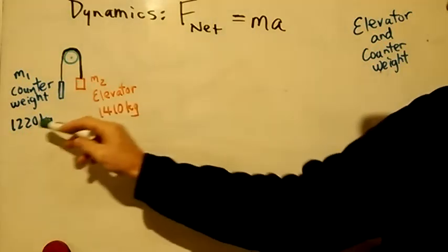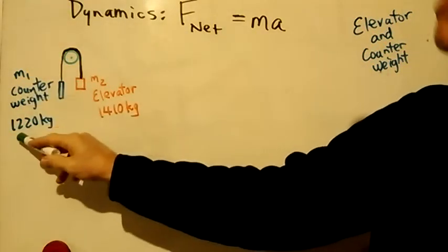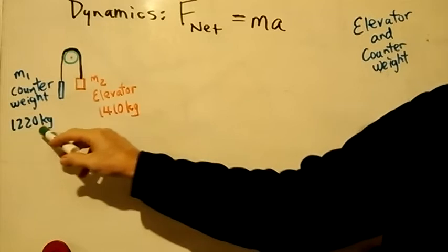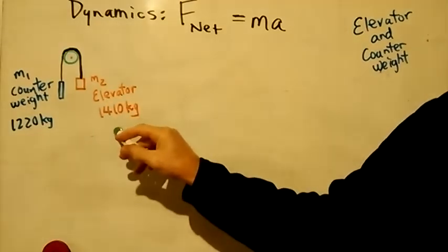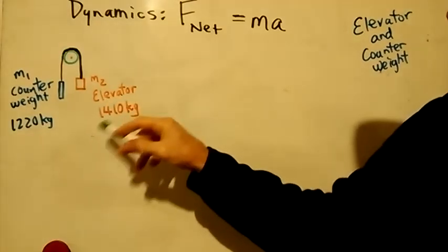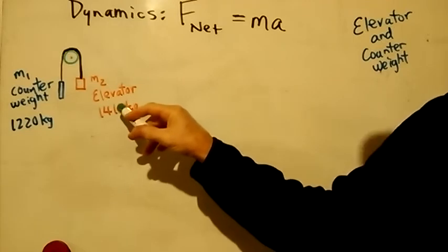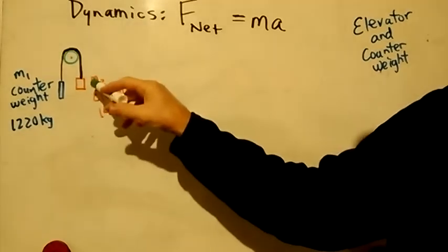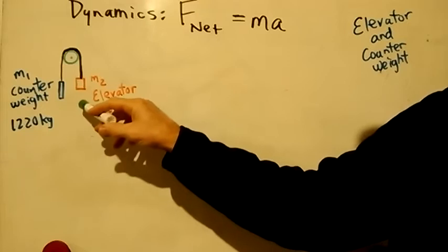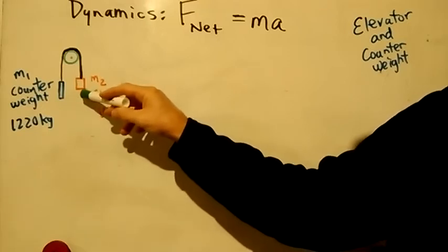And just for this example here, I'm just saying that the counterweight has a mass of 1,220 kilograms, and the elevator has a mass of 1,410 kilograms. If you look at this, if there's no friction, then you know the elevator is going to win the tug of war. It really is just a tug of war.